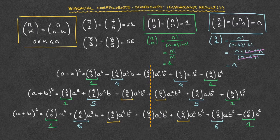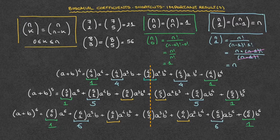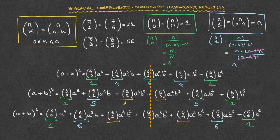Thanks to these results, the number of binomial coefficients we actually have to calculate isn't that many. For the first expansion (n=4), the only one we really need to calculate is the middle coefficient 4 choose 2, which equals 6. For the second expansion (a+b)^5, since the two middle coefficients are equal, we only have to calculate one: 5 choose 2 equals 10, so 5 choose 3 is also equal to 10.